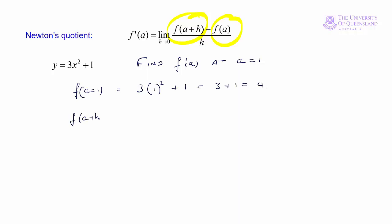f of a plus h in this case is equal to f of 1 plus h. So where we see an x in our function, we'll replace that with 1 plus h. That's equal to 3 times (1 plus h) squared plus 1.